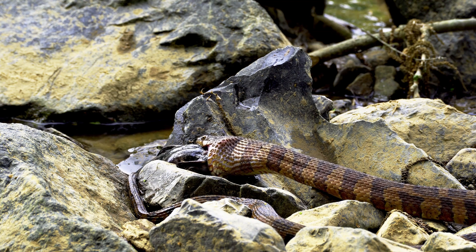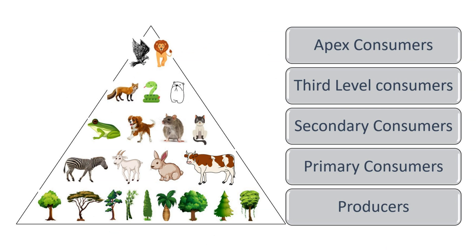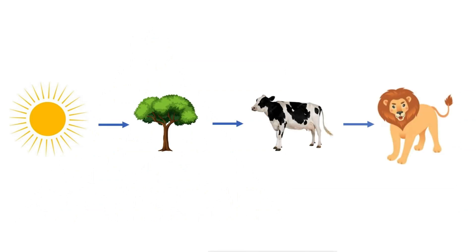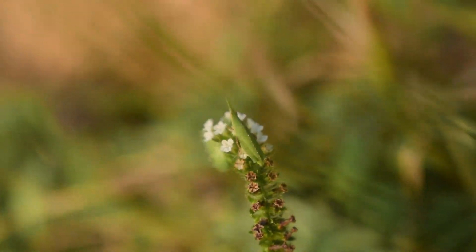To better understand these relationships, we can use a food pyramid. It not only shows the food connections between organisms but also reflects their population sizes and food supplies. At the bottom of the pyramid, we have the food producers, which form the largest population. As we move up, population sizes decrease because more energy is needed to sustain each organism. Energy flows through a food chain starting from the sun and passing on to plants, plant eaters, and meat eaters. However, some energy is lost as heat or used for life processes like respiration and movement. Due to this energy loss, animals higher up in the food chain need to eat more to gain enough energy. That's why a lion needs to hunt more prey than a grasshopper needs to eat grass.